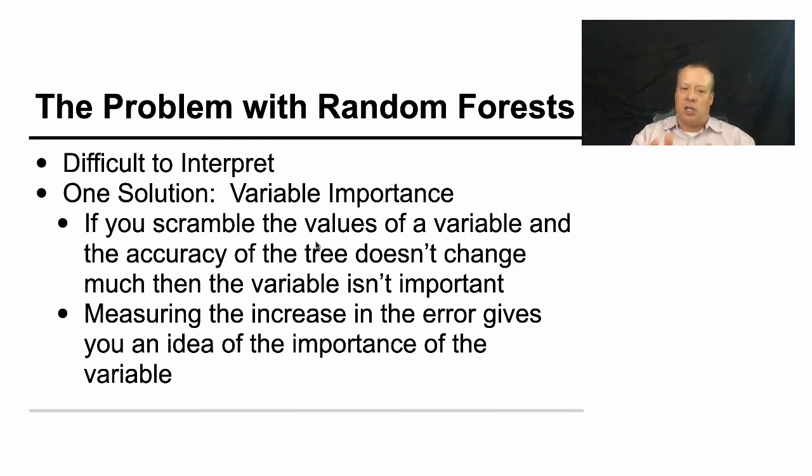And if I scramble the values of that variable and I run the random forest on it and the accuracy of the forest doesn't change very much, then that variable is not important to the way the random forest makes decisions. So I can measure how much error I get when I use my training data as is versus how much error I get when I scramble that particular variable. And I can measure the difference between that. And that tells us how important that variable is.